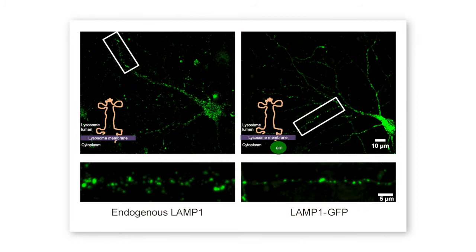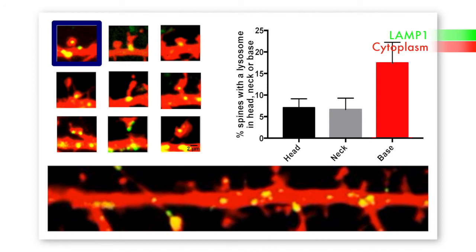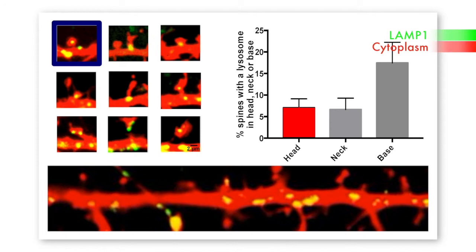Collaborating with EM expert Mark Ellisman, they rarely saw classically defined lysosomes in dendrites by electron microscopy. But when they examined LAMP1-positive structures by classic immunohistochemistry and live imaging using ectopically expressed LAMP1-GFP, their distribution was all over the place — at the base of spines, neck of spines, in spine heads, and very far out in distal dendrites — and they moved around, while some remained stationary.